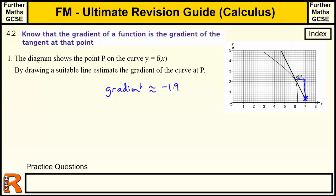Now it does depend on the line you draw. Try to get it so it balances — you've got about the same amount of line on either side. Maybe this could be a little bit steeper, but it doesn't have to be particularly accurate. In fact, the first time I did this I got minus 1.6. So that's just checking you know that the gradient at any point on the curve is the gradient of a line just touching that curve at that one point — that's what tangents are.